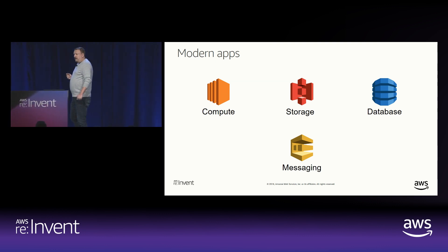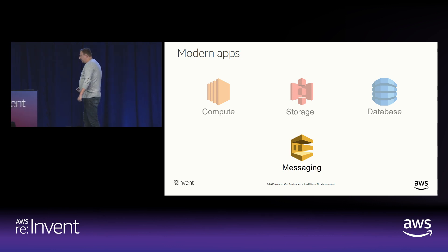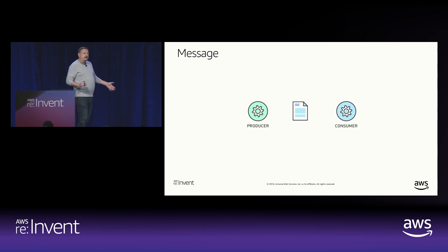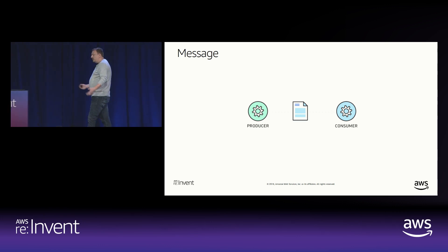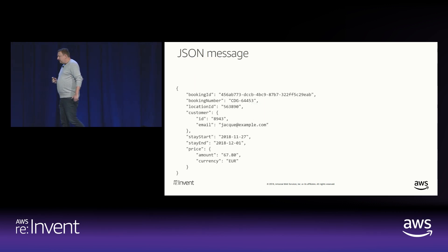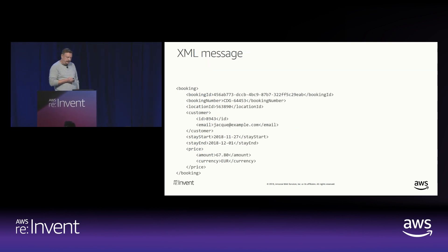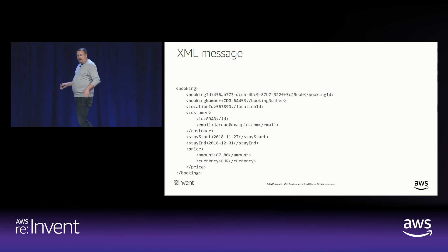We like to think about messaging as the fourth pillar on which you build your modern applications. In messaging, we deal with passing messages around. The systems that send messages are called message producers. The systems that consume these messages are message consumers. Messages are whatever you want to send between two systems. Here's an example of a hotel booking message in JSON format. The same information can be passed using whatever format you like — here's the same message described in XML. It's up to the producer and consumer service to establish the format and contents of messages.